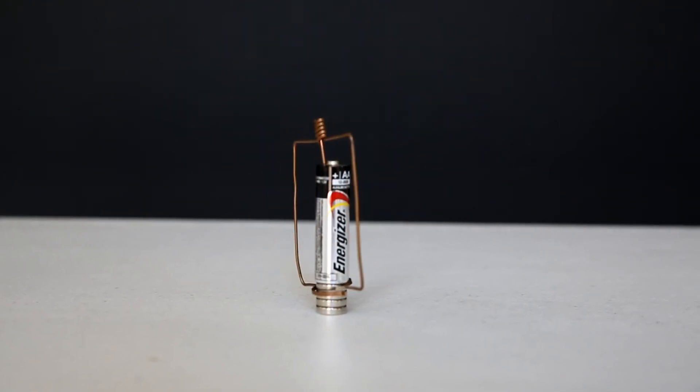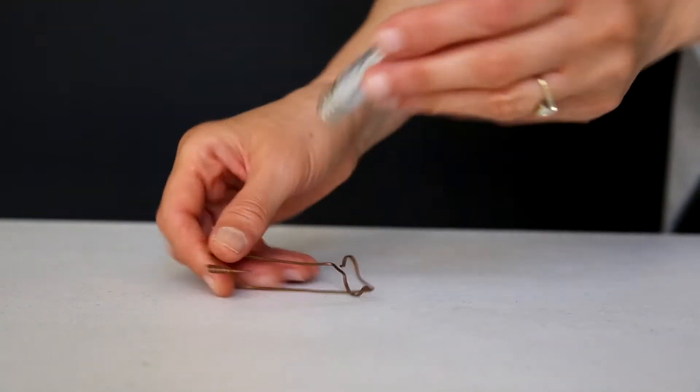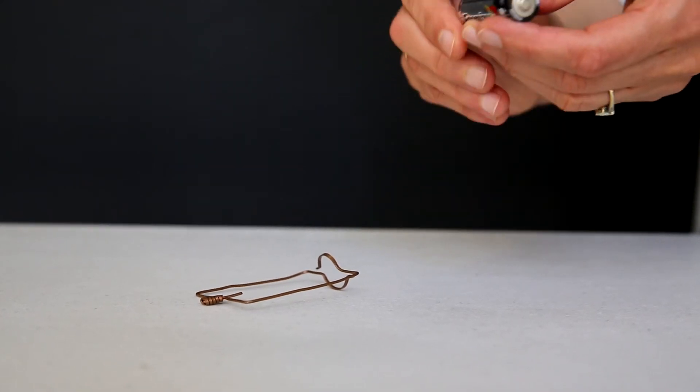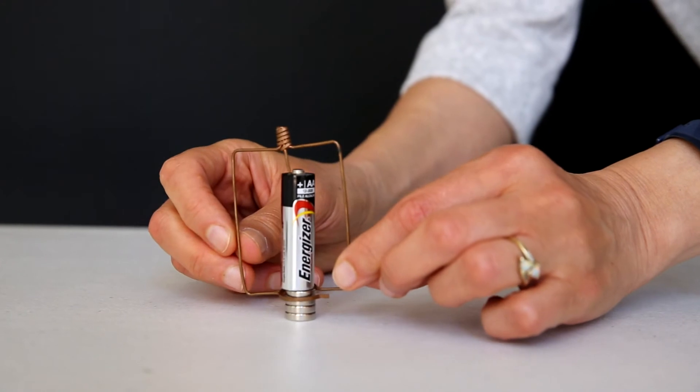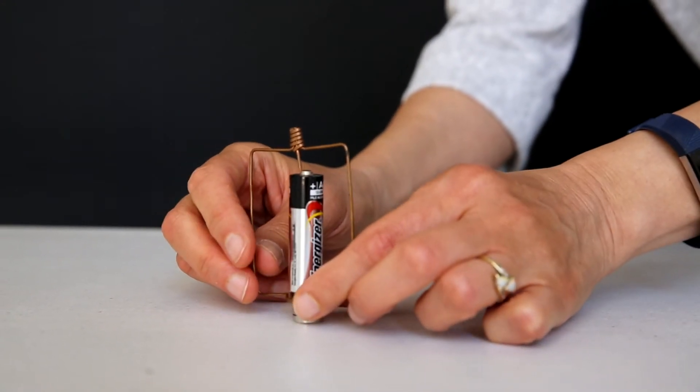There is force acting on moving electrons in the magnetic field. Let me change the polarity, play with it a little bit, and check if it works better, because the battery could be already magnetized.